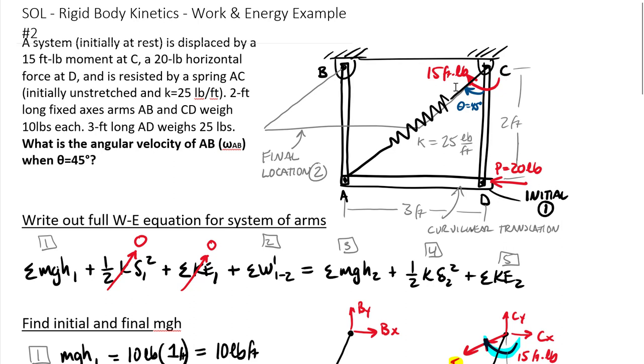Additionally, we had a 15 foot-pound couple applied around point C and a spring stretched between A and C with a spring constant of 25 pounds per foot. While you could work this problem using Newtonian kinetics with sum of forces equals mass times acceleration and sum of moments equals I times alpha, this would be a bear of a problem.